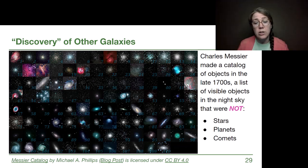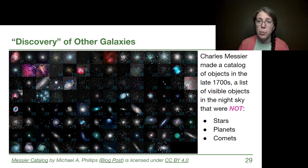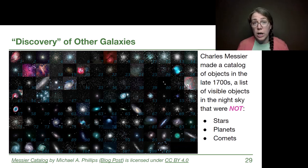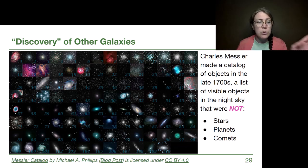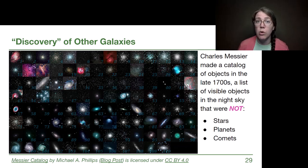To make his own life easier he made a catalog of things he was finding that initially looked like a comet through his low-powered telescope and that he knew he wanted to rule out. This list of over 100 objects is called the Messier catalog. Objects have M numbers, and for example M51, from our previous discussions this module, is the Whirlpool Galaxy.